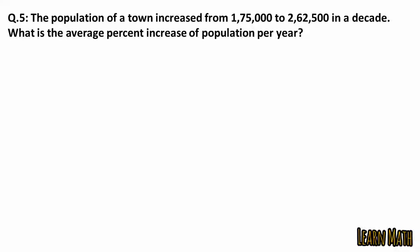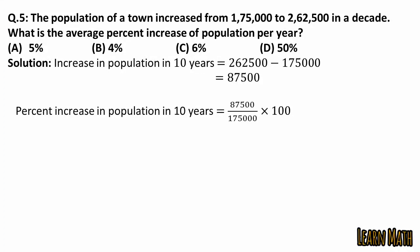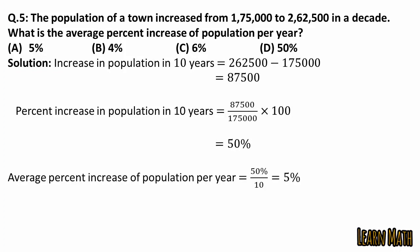The fifth question is: the population of a town increased from 1,75,000 to 2,62,500 in a decade. What is the average percent increase of population per year? Increase in population in 10 years equals 2,62,500 minus 1,75,000, which is 87,500. Percent increase over 10 years is 87,500 divided by 1,75,000 multiplied by 100, which gives 50 percent. Dividing by 10 for the average per year gives 5 percent. The correct option is option A. Thank you so much!